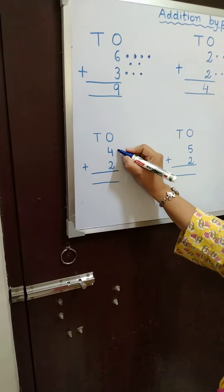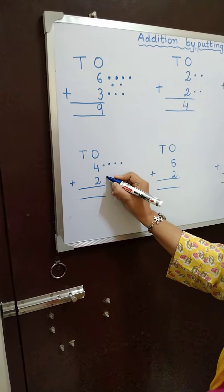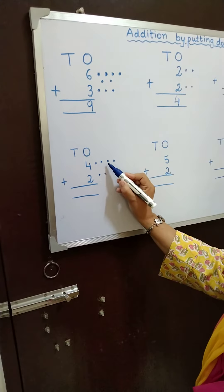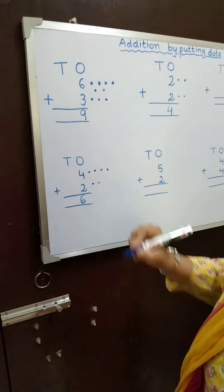4. 1, 2, 3, 4. 1, 2. Now let us count the dots. 1, 2, 3, 4, 5, 6. I will write 6 here.